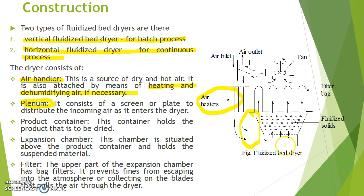The next part is the product container, which holds the product that is to be dried. This container has a perforated bottom through which the hot air can pass into the products.